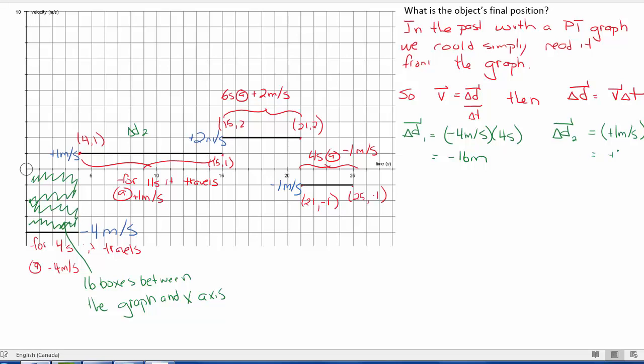Sorry, there's a little bit cut off from the screen here, but basically the second interval calculates a displacement of plus 11 meters. And look, there's 11 boxes. We can do the third. Six seconds at 2 meters per second, so 2 times 6 is 12. And then again, if I count the boxes, I notice between the x-axis and the graph itself, there are 12 boxes.